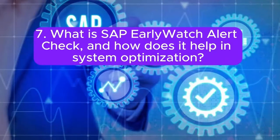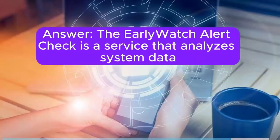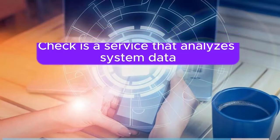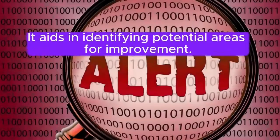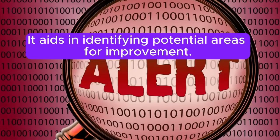7. What is SAP Early Watch Alert Check, and how does it help in system optimization? Answer: The Early Watch Alert Check is a service that analyzes system data and provides recommendations for optimizing system performance, security, and stability. It aids in identifying potential areas for improvement.